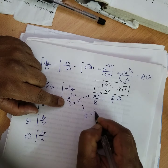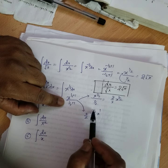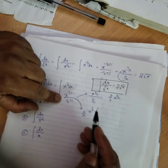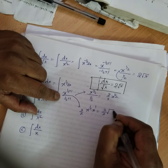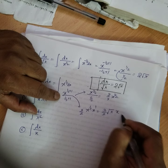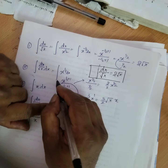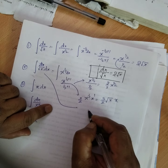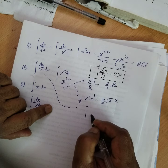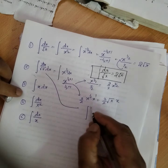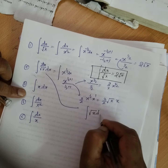x to the power of 3 by 2 is x to the power of half times x to the power of 1, which equals 2 root x times x, or x root x. So integral of root x dx equals 2 by 3 times x root x. You have two forms of this formula.